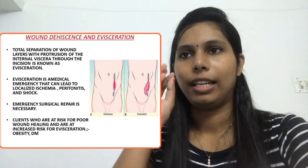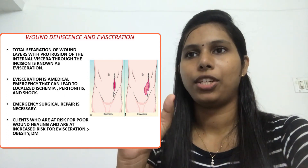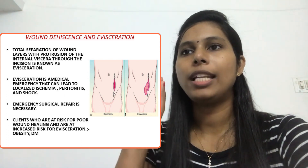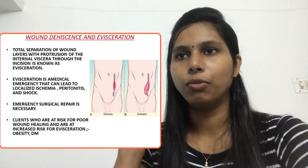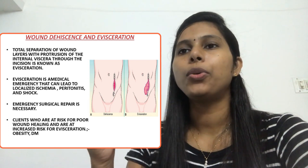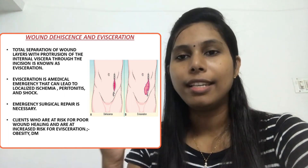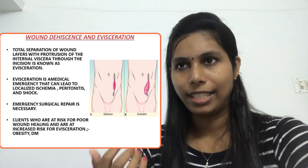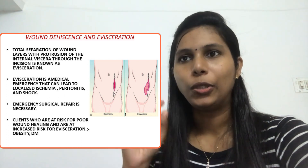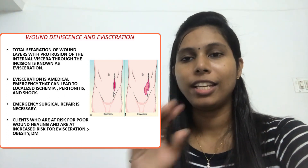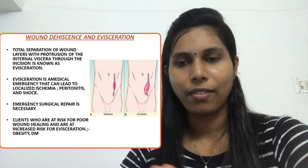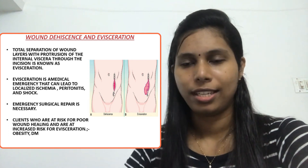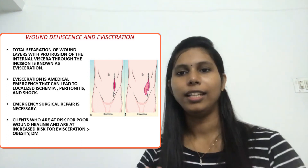Wound dehiscence and evisceration: total separation of wound layers with the protrusion of the internal viscera through the incision is known as evisceration. The wound edges separate and the inside contents protrude out — that is evisceration.